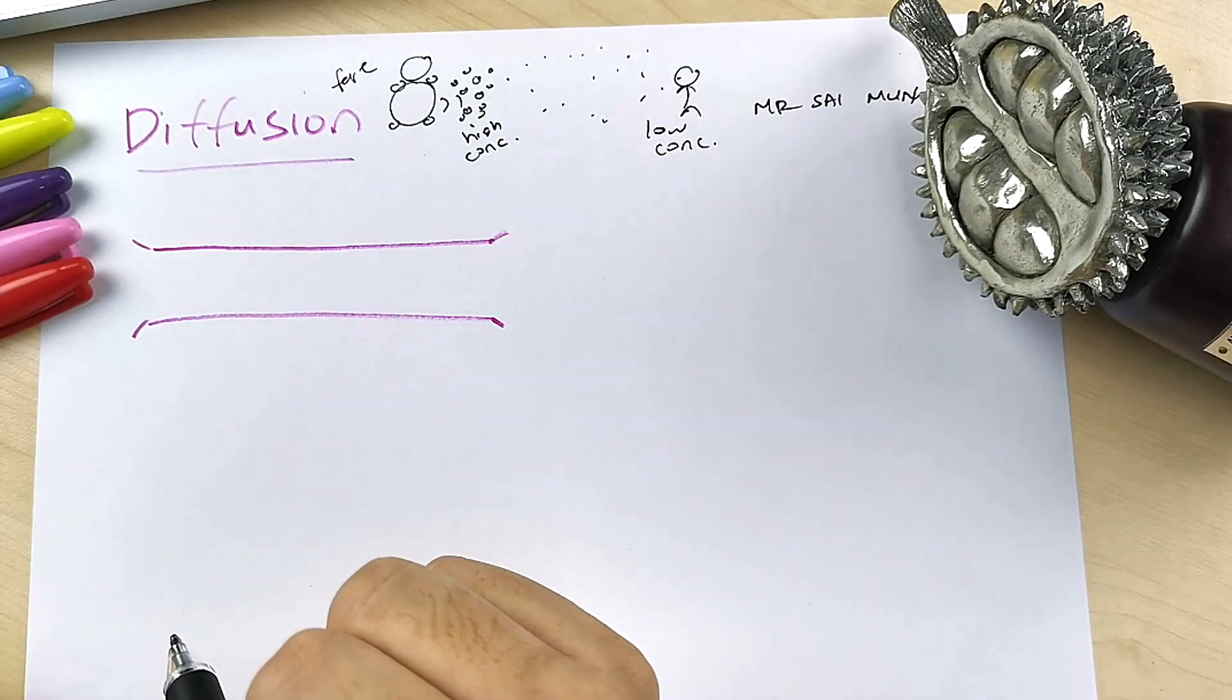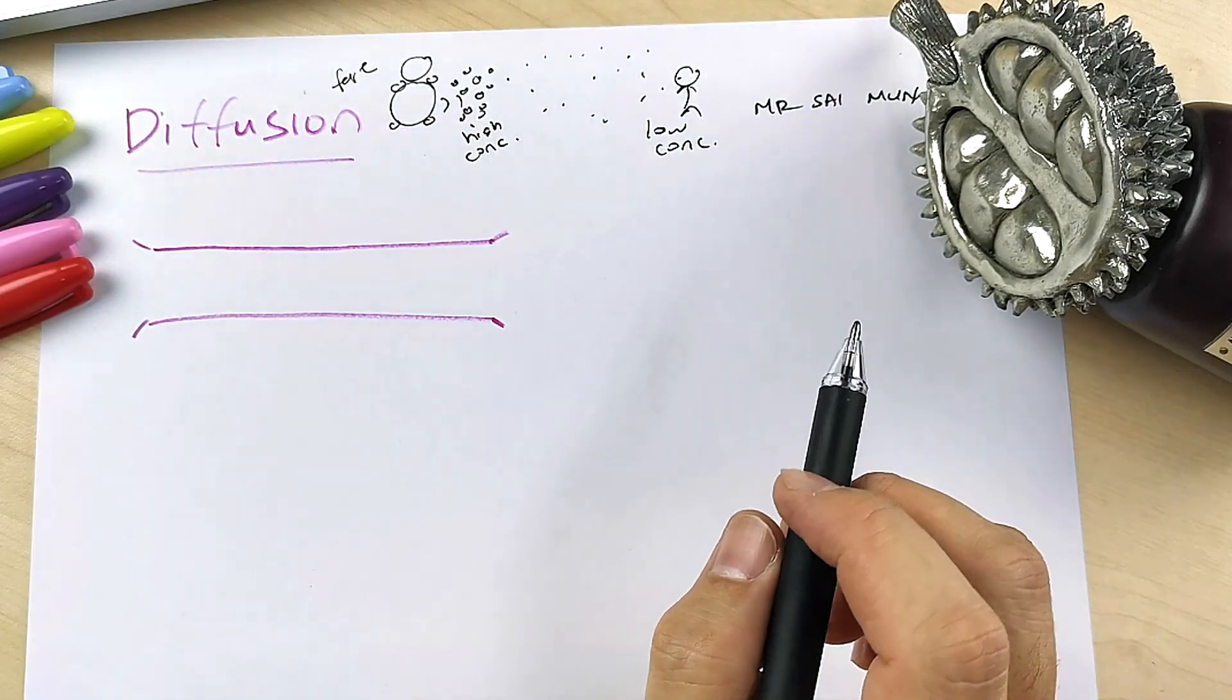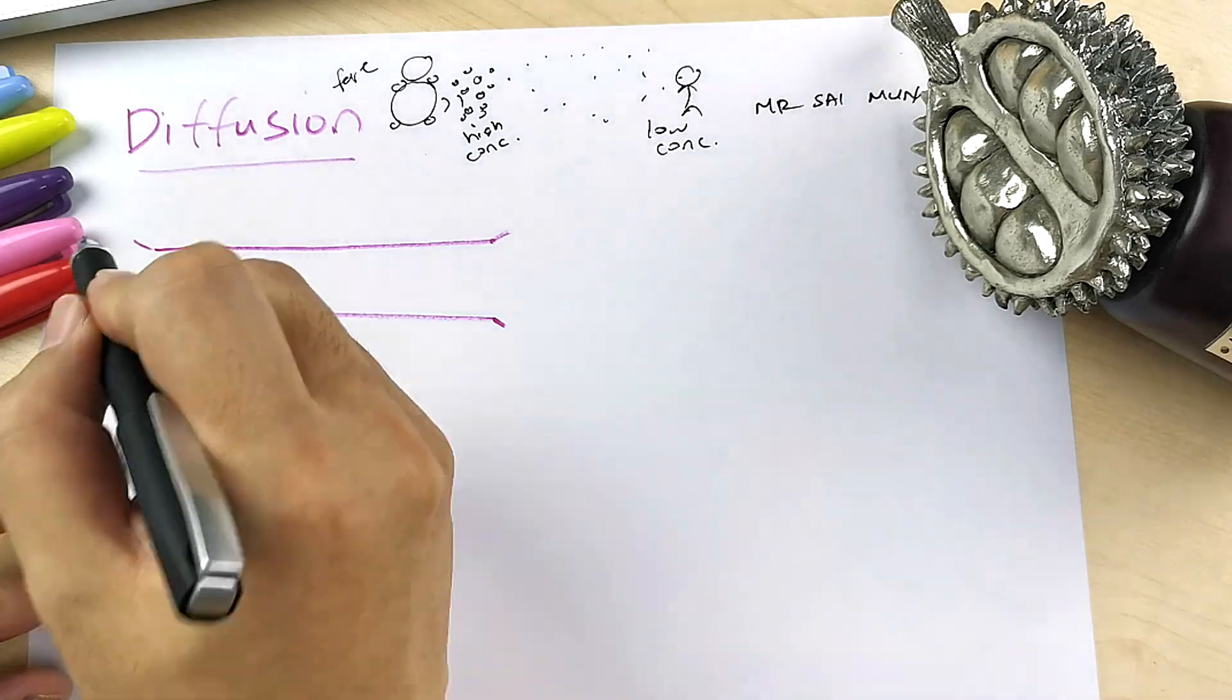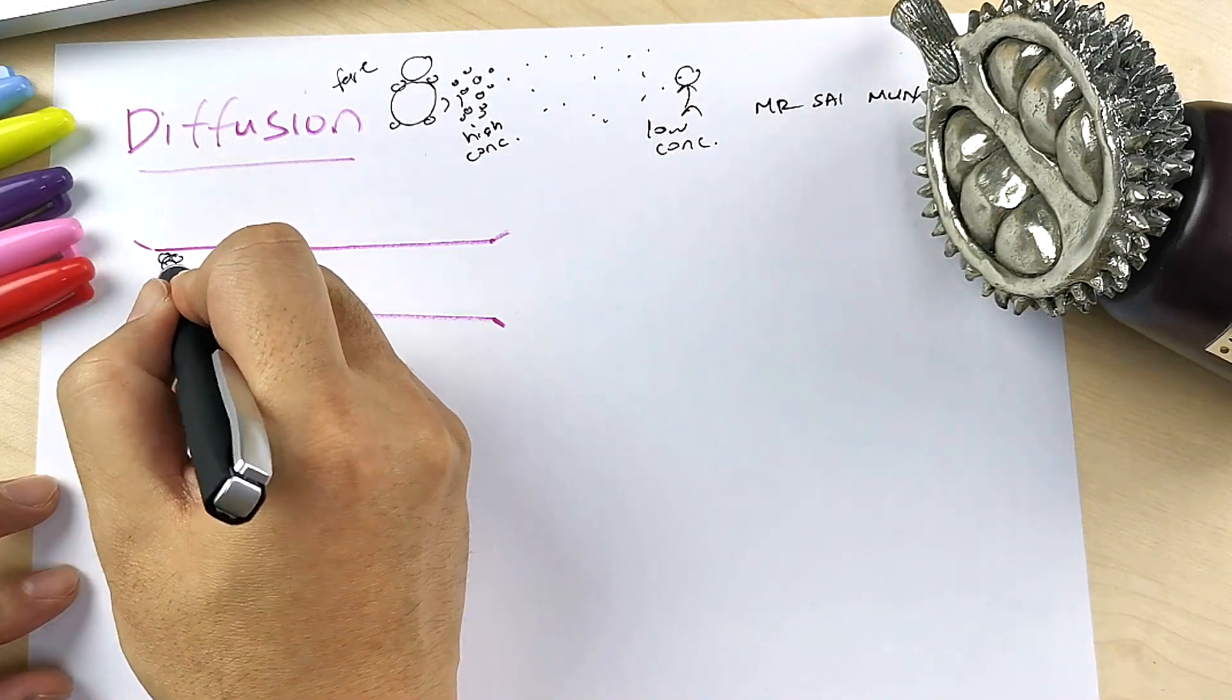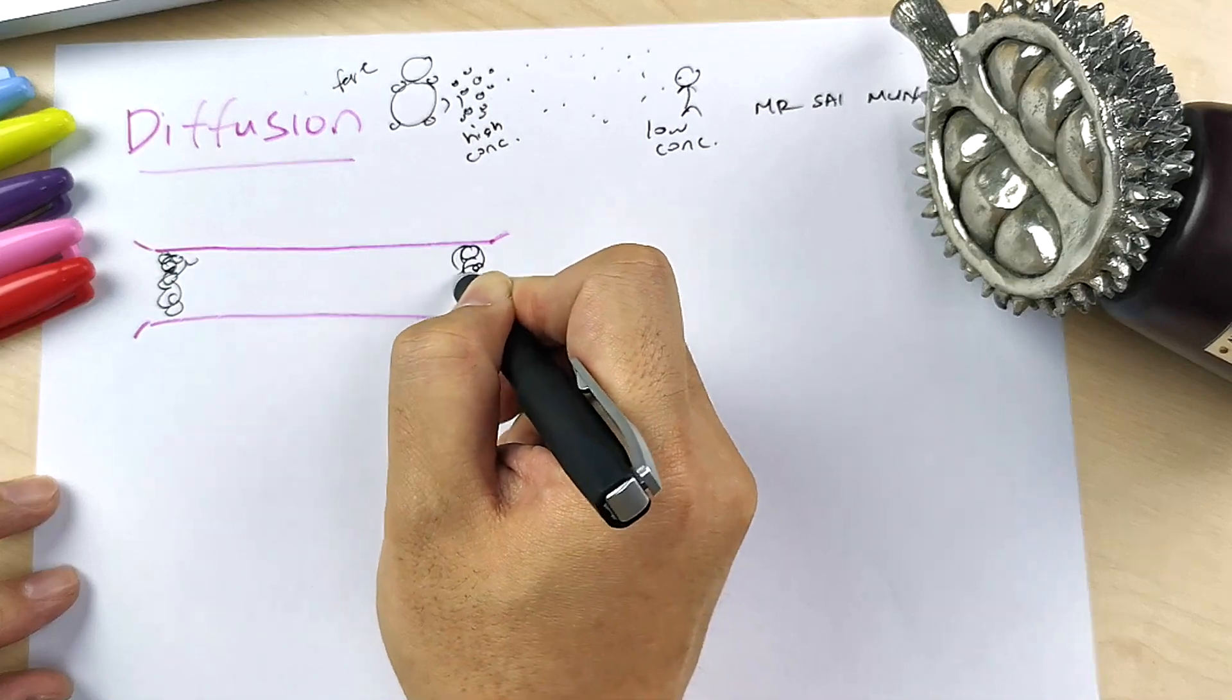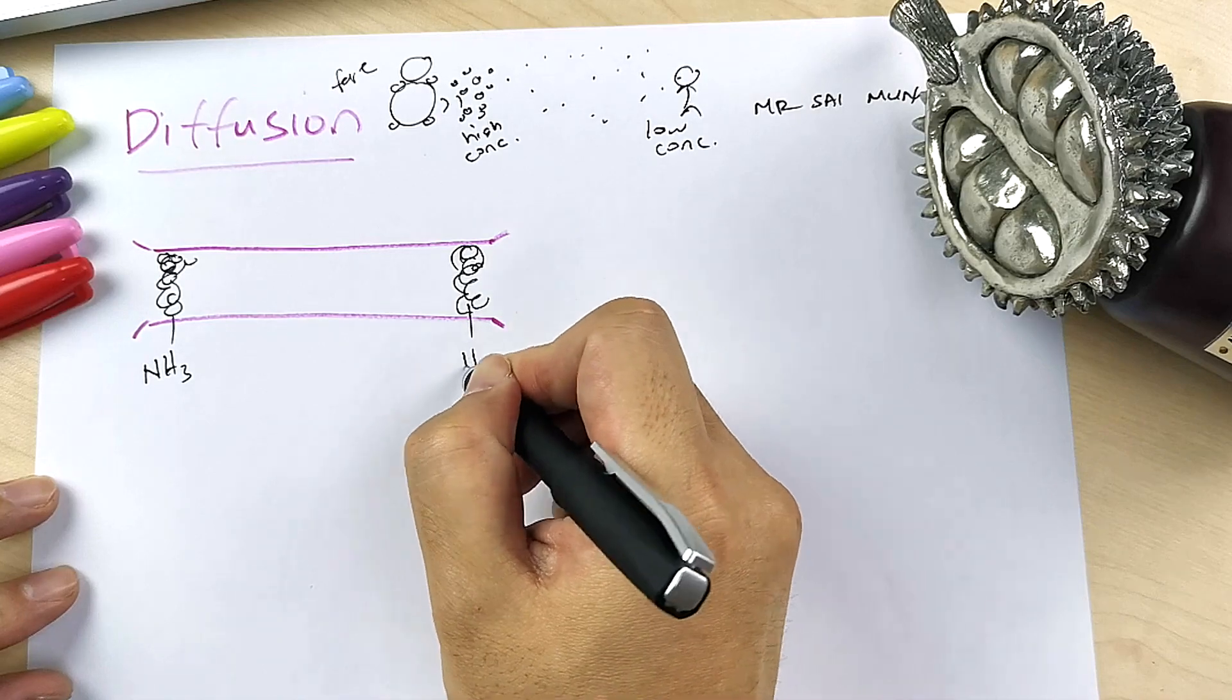Now diffusion, a very common example is when in exams or in your school they like to say, okay, it's cotton wool. So ammonia is placed here and then HCl is placed here.